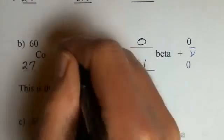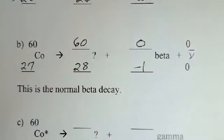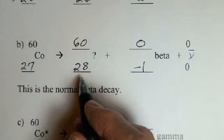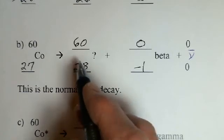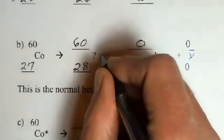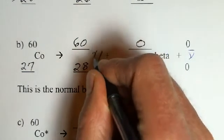So what number added to minus one will produce 27? And you've probably deduced it's 28. What number added to zero produces 60? So easy, this is. And now we go to our table, we look up what element has 28 protons, or we remember what we did above, and we find that it's nickel.